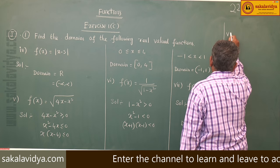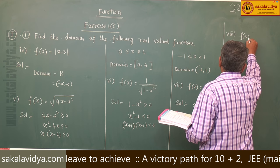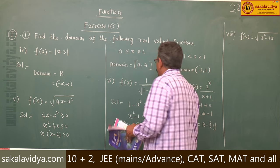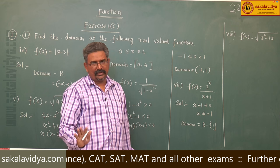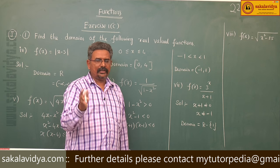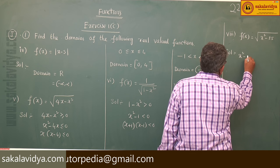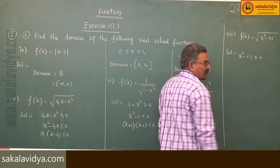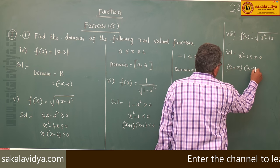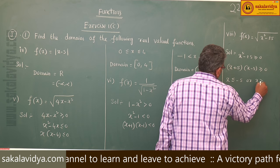Eighth problem: f of x is equal to root of x square minus 25. For this, x square minus 25 must be greater than or equal to 0. Using the difference of squares form, x plus 5 into x minus 5 is greater than or equal to 0, giving x less than or equal to minus 5 or x greater than or equal to 5.